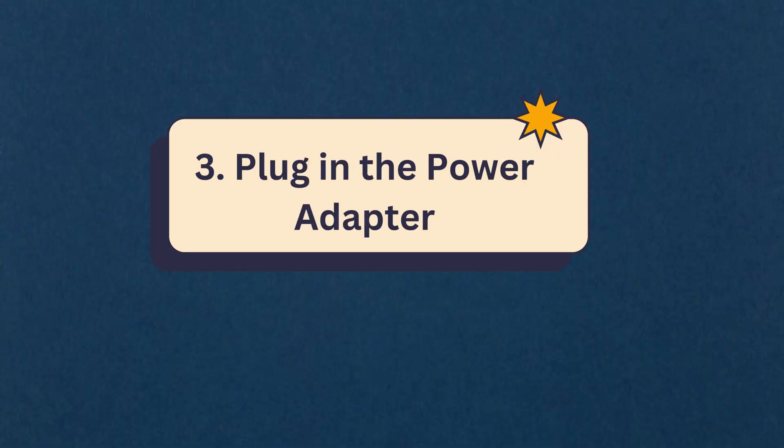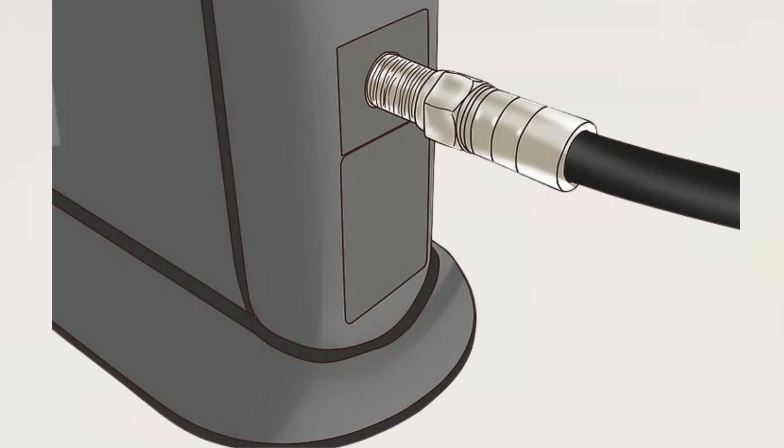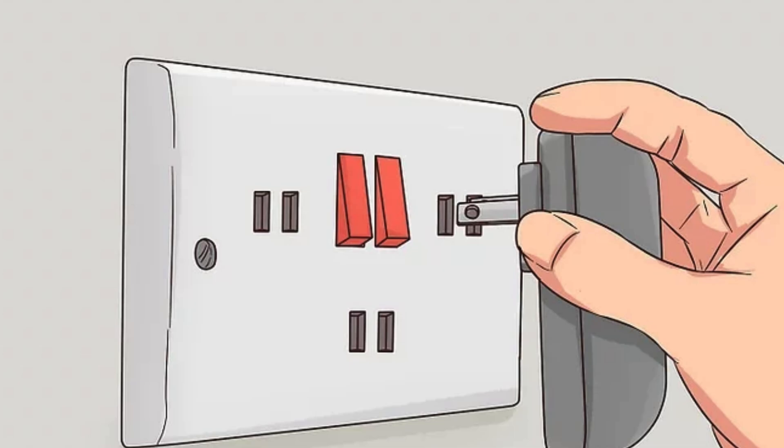Step 3: Plug in the power adapter. Insert the power adapter into the modem's power port and plug the other end into a wall outlet. This powers up the modem.